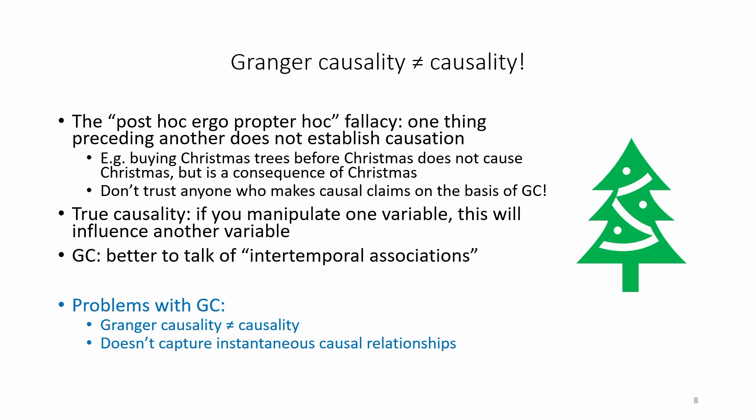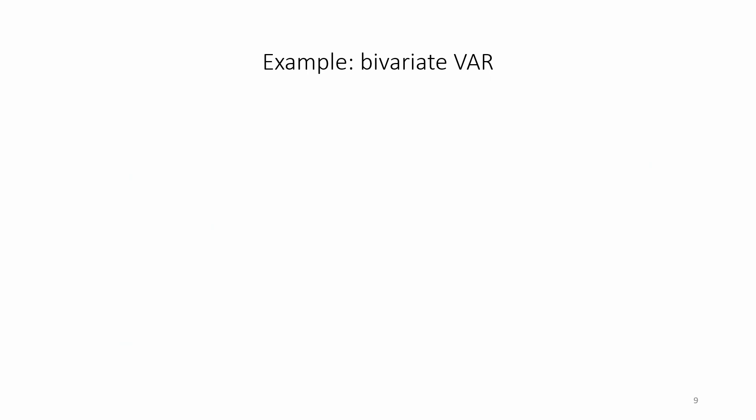Second, Granger causality doesn't capture instantaneous causal relationships. Granger causality tests for relationships between variables with a lag rather than focusing on whether variables are co-evolving at the same time.